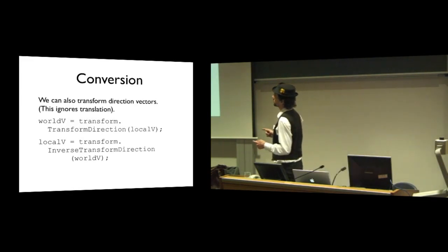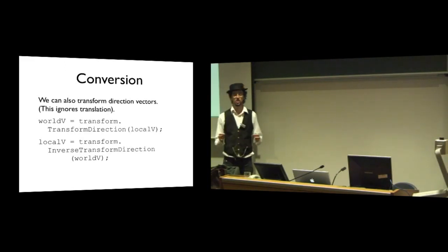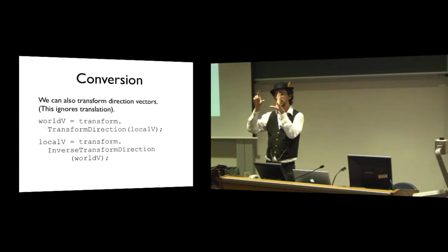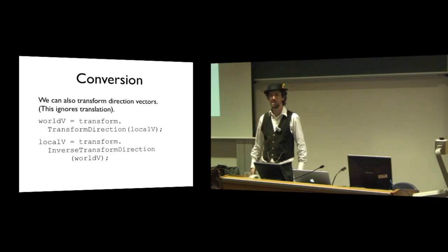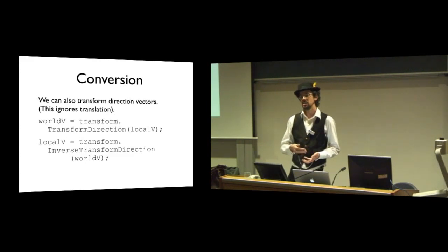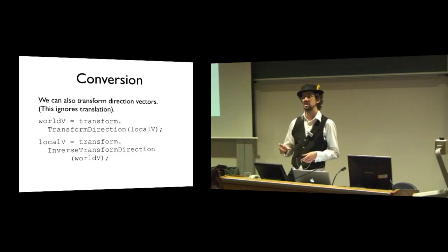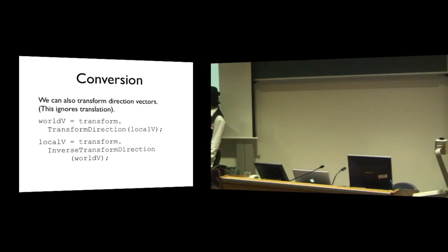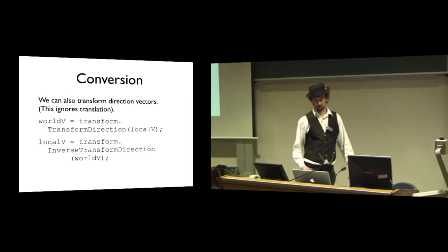The other thing we often want to transform is direction vectors. The difference between transforming a point and transforming a direction is: if we translate the space, all points are also translated. But a vector within that space should still have the same length. If we translate a vector, we don't need to change it — the vector has the same length, just moved to a different place in the space. So if the thing you're working with is a direction and not a point, you need to use transform direction rather than transform point.